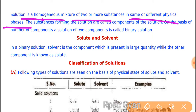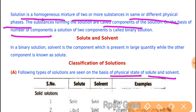The substances forming solutions are called components of the solution. On the basis of number of components, a solution is of two components. If there are two components, it is called a binary solution. In a binary solution, one is the solvent and the other is the solute. Solvent is the component that is in large quantities, while the solute is in small quantities.